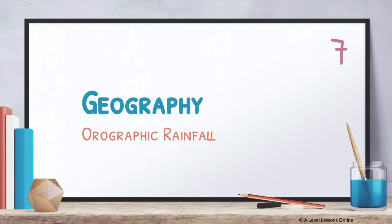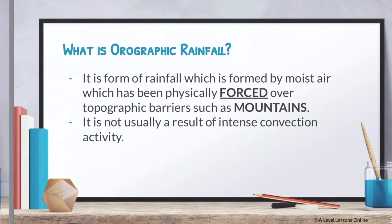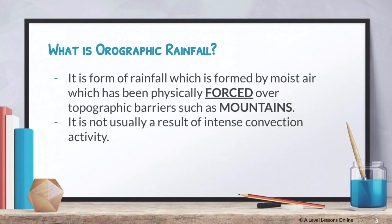Welcome back to part 7 of our atmospheric circulation series. Today we're going to be talking about orographic rainfall. This is actually a continuation from the previous part, part 6, which is on convectional rainfall. Make sure you go and look at that video first before we move on, because orographic rainfall can tend to be slightly more complicated.